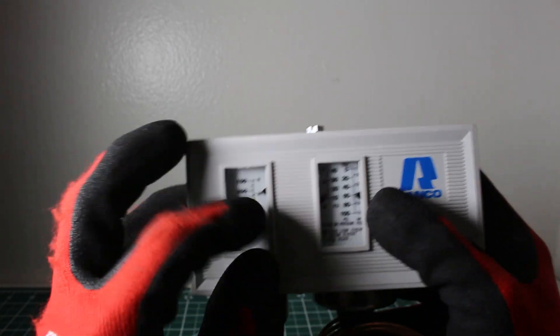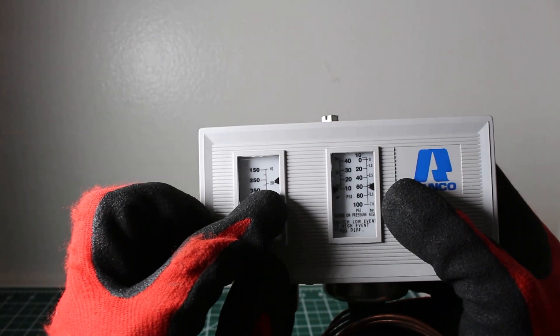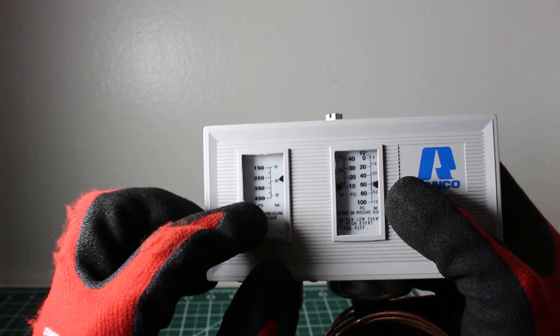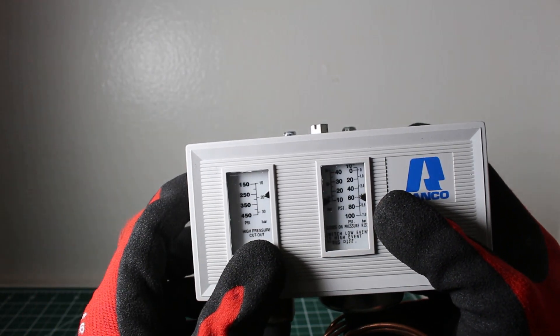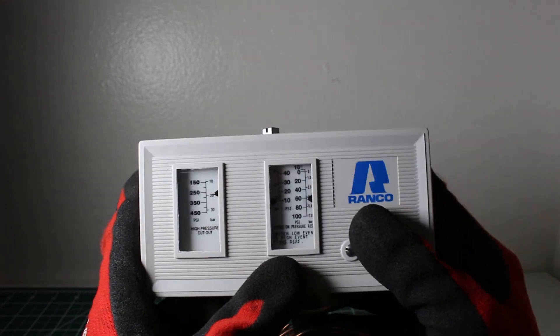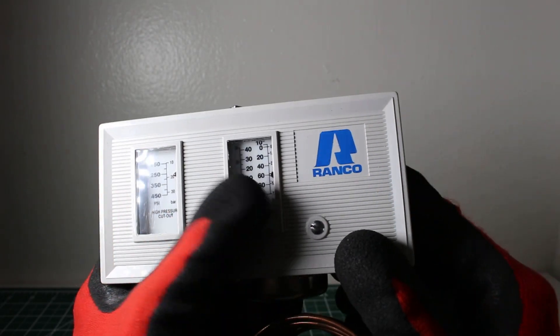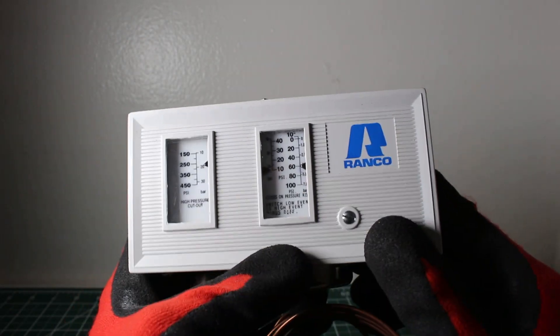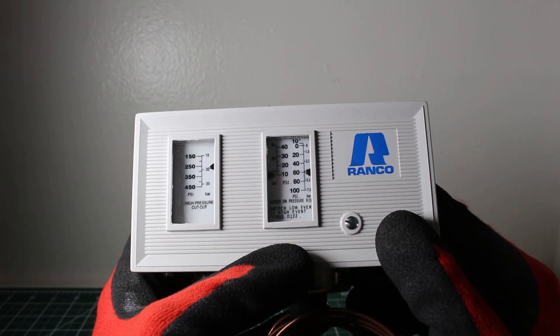On the high pressure side, there is just one black bar, one tab and you choose at which pressure do you want your system to cut out at. The low pressure control is slightly different. The low pressure control has two adjustments. Let's take off our faceplate to get a closer look.